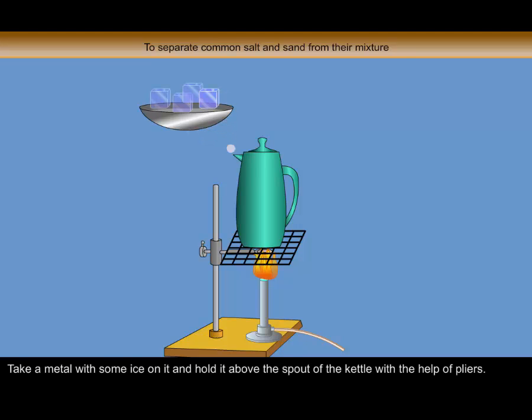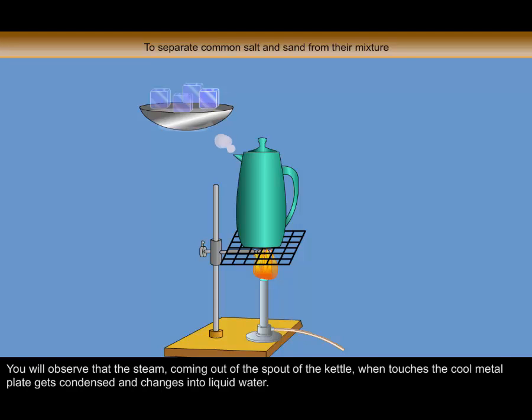Take a metal plate with some ice on it and hold it above the spout of the kettle with the help of pliers. You will observe that the steam coming out of the spout of the kettle, when it touches the cool metal plate, gets condensed and changes into liquid water.